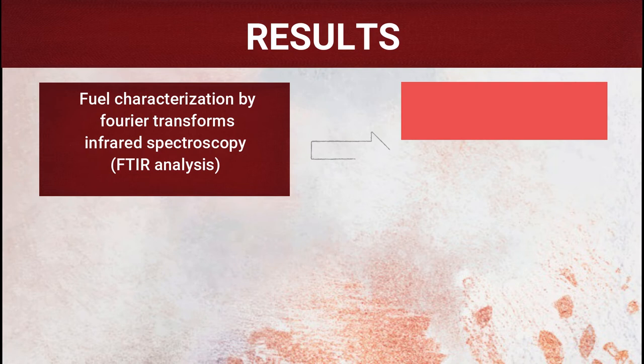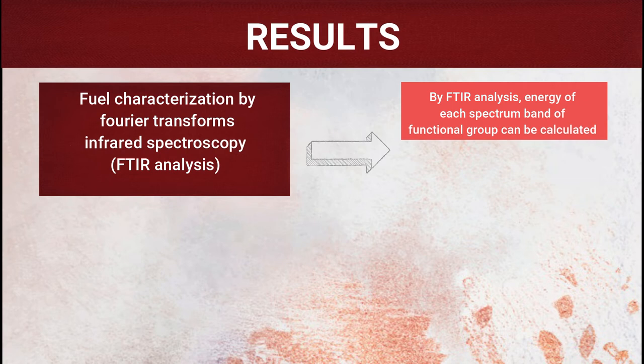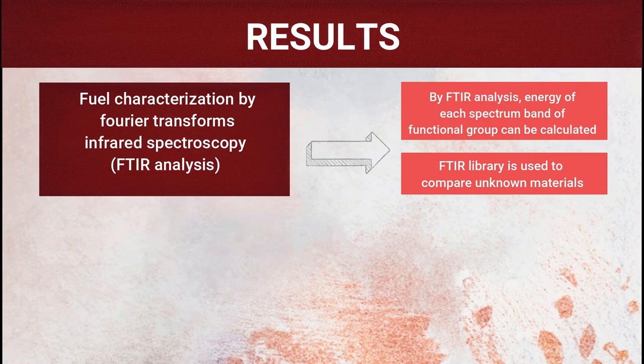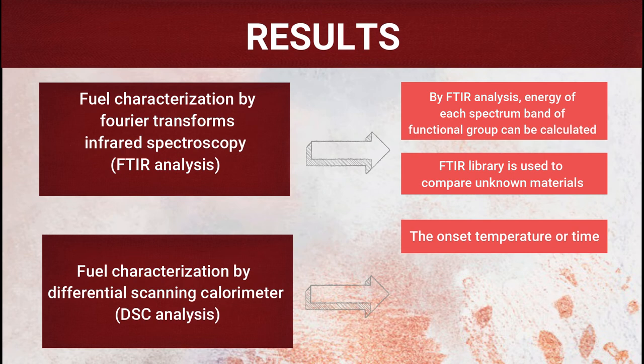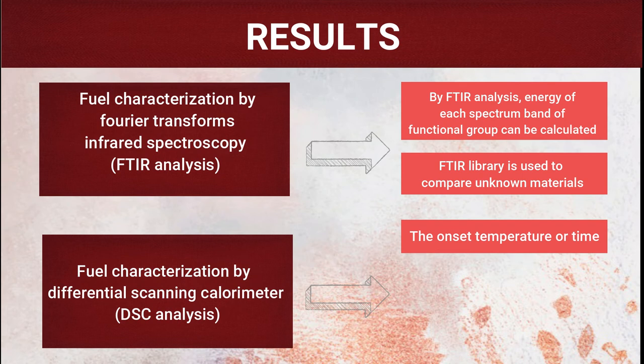The results show that according to FTIR analysis using infrared spectroscopy, the energy of each spectrum band of functional groups is calculated. An FTIR library is used to compare unknown materials, making identification accurate. For the DSC analysis, the onset temperature for fuel characterization is found using a differential scanning calorimeter.